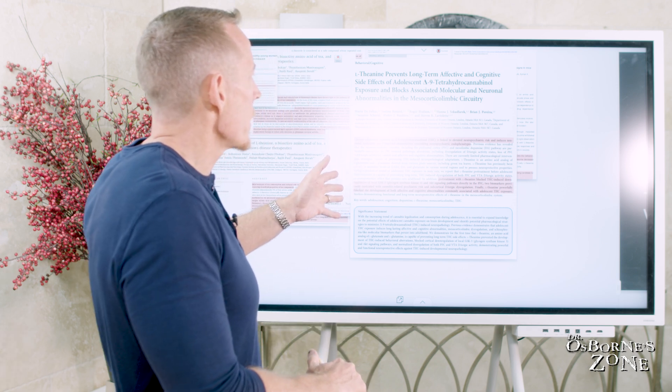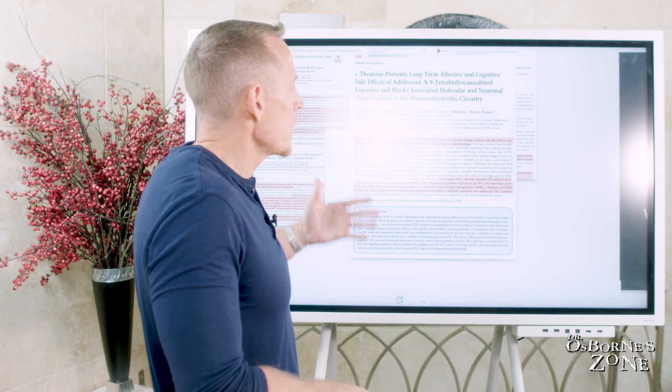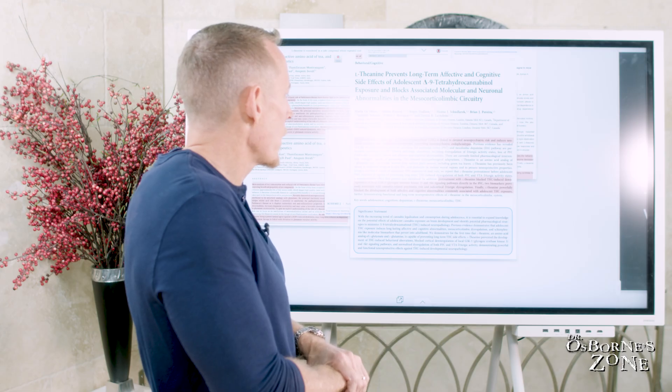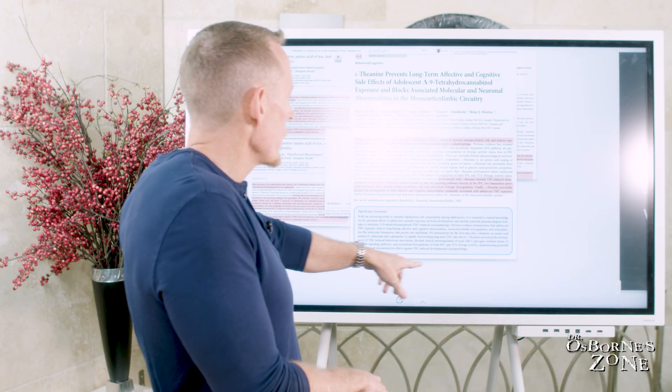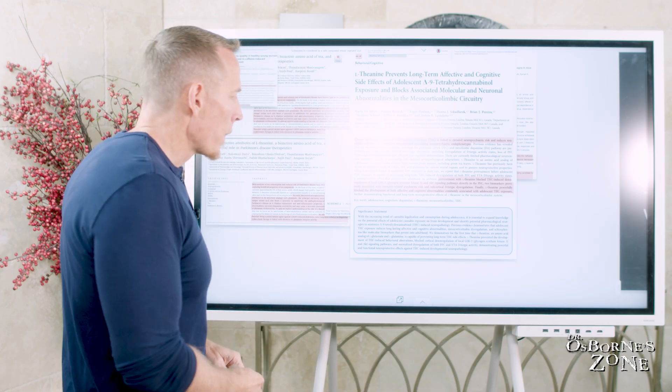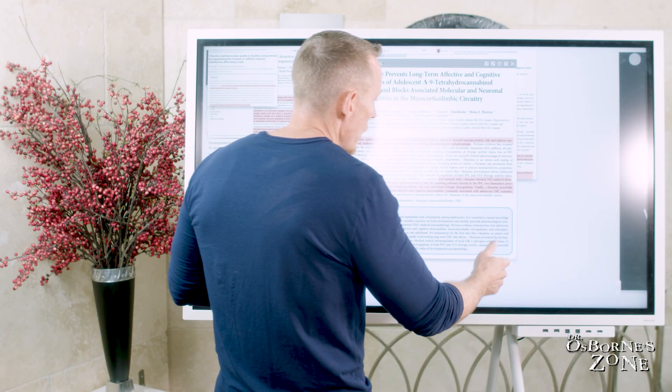These researchers were trying to study whether or not theanine could have some beneficial effect for these individuals. Their preliminary study is in mice. What they found is that pretreatment with L-theanine blocked THC induced down-regulation of glycogen synthase kinase 3, which is a chemical byproduct of toxicity of marijuana use. The L-theanine powerfully blocked the development of both affective and cognitive abnormalities commonly associated with adolescent THC exposure. Their findings, although it was in a mouse trial, human trials need to be done.